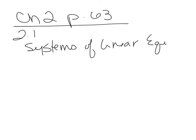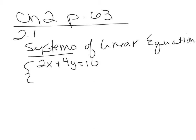We've talked about linear equations in chapter 1, but now we're going to talk about systems. A system of equations is simply two or more equations that are being grouped or solved together. For instance, 2x plus 4y equals 10 and negative 5x plus 7y equals negative 3. By putting braces around these two equations, I am grouping them together and they are now a system.